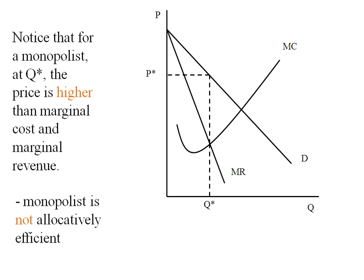Now for a monopolist at Q star, price is higher than marginal revenue and marginal cost. This is marginal revenue and marginal cost at Q star, but we're charging P star, a higher price.